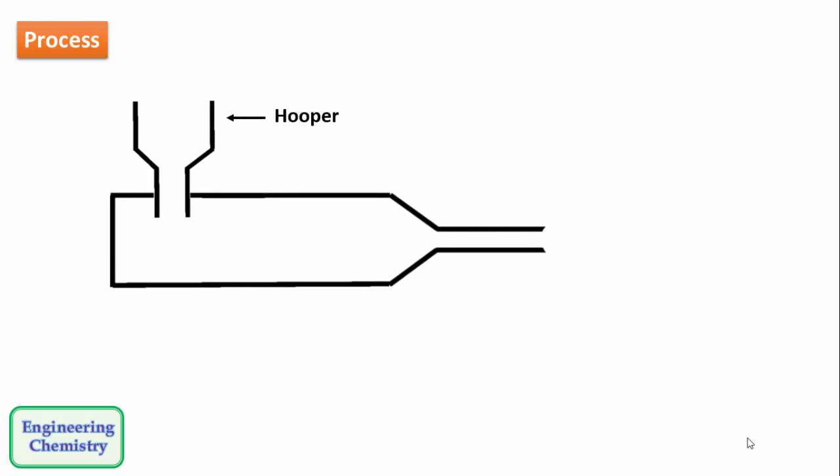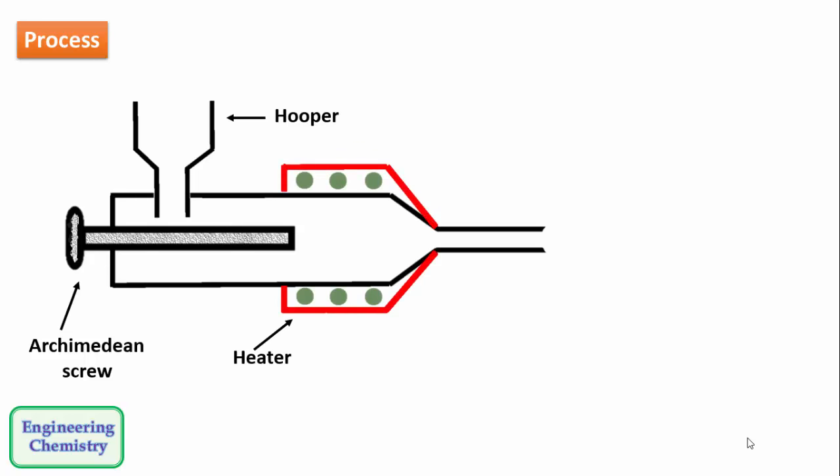Let us understand the process of injection molding. It consists of a machine with a hopper in which all the ingredients of the plastic will be taken. On the left hand side it consists of an Archimedean screw to push the materials into forward direction. Then in the middle there is a heater to melt the plastic ingredients.